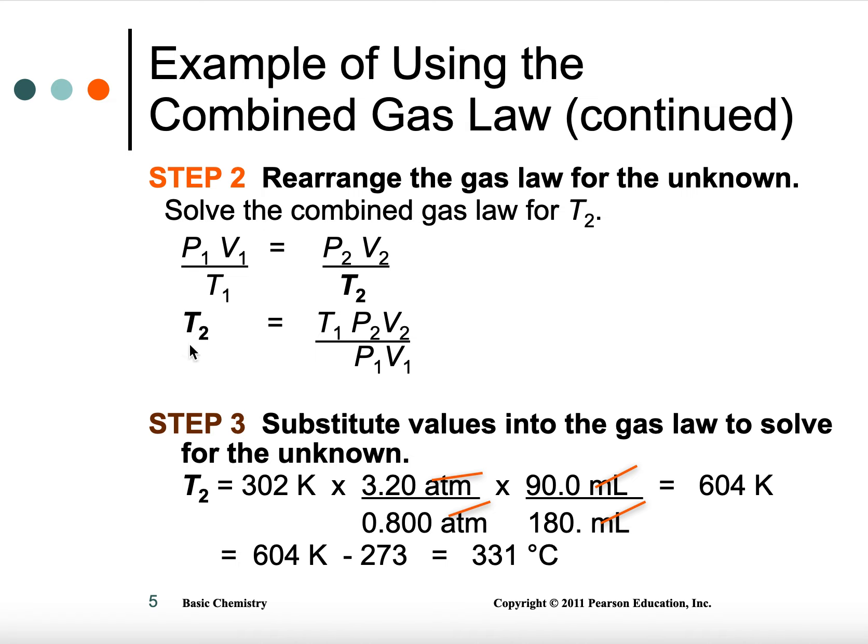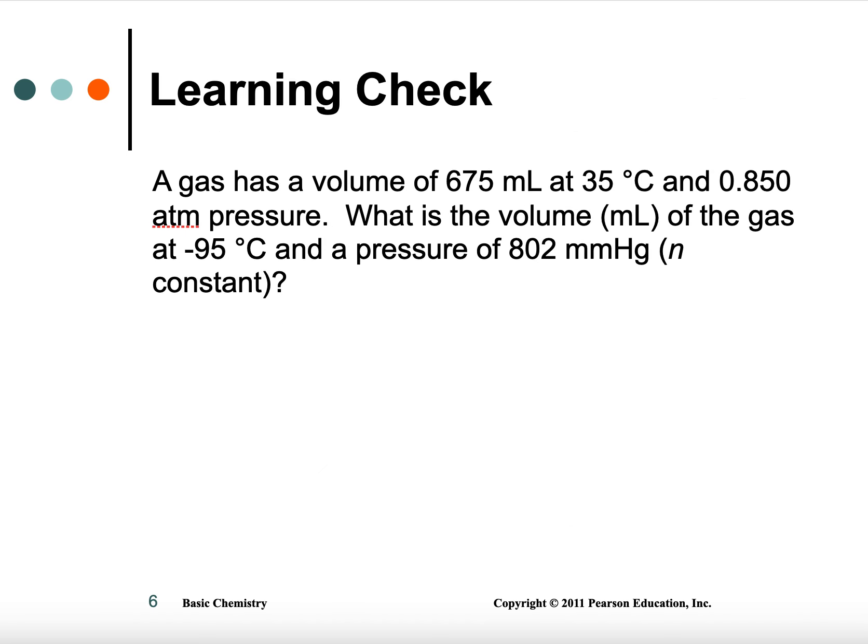Whatever you're solving for, T2 in this case, put the other five there. Fill them in. Multiply top times top times top. Divide by bottom equals. Divide by other bottom equals. And you end up with an answer. If you have a temperature and you're asked for Celsius, remember this temperature is Kelvin. You're going to have to subtract 273 to get it back to Celsius. And this is what this problem was.